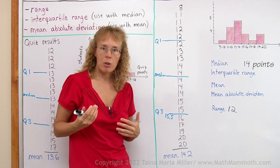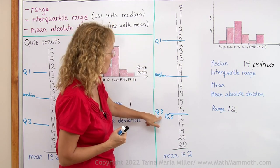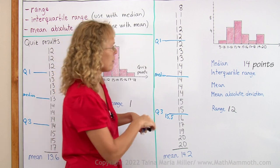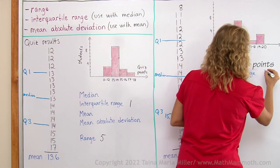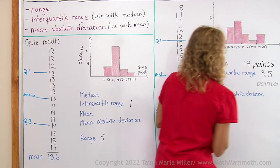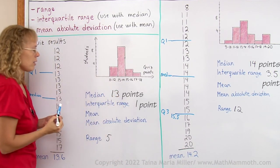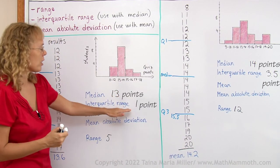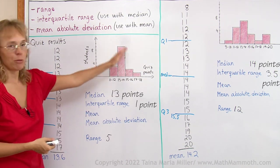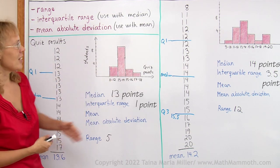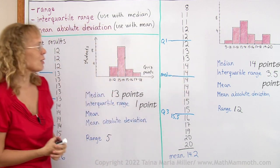And now the interquartile range would be the difference between these two. 15.5 and 12. So we get 3.5. Whereas here, the median was 13 and the interquartile range was 1. So number-wise, it is agreeing with what we can see in the graph, that that is more spread. That data is more spread.